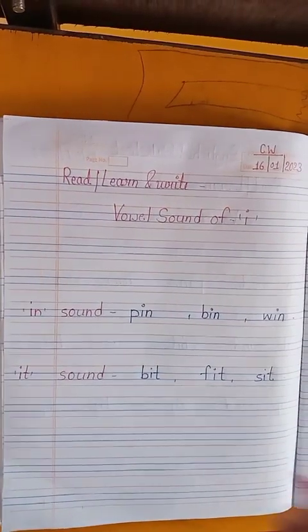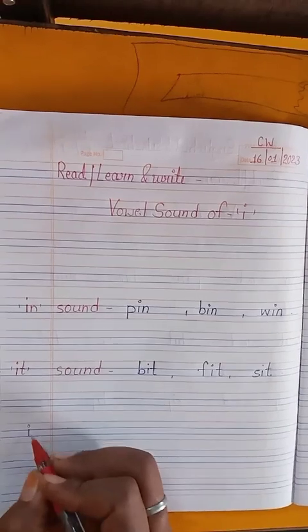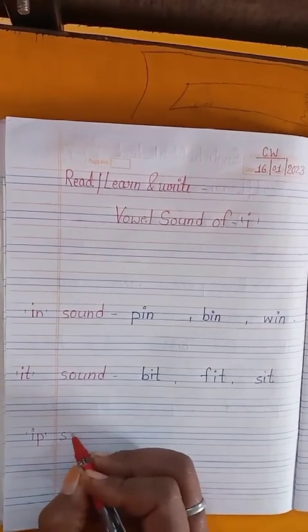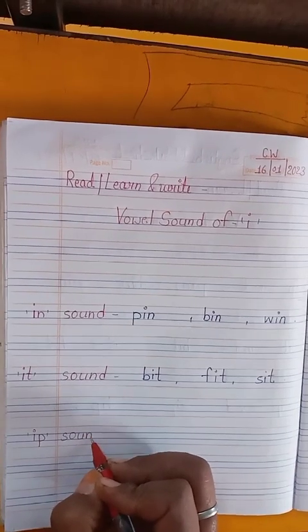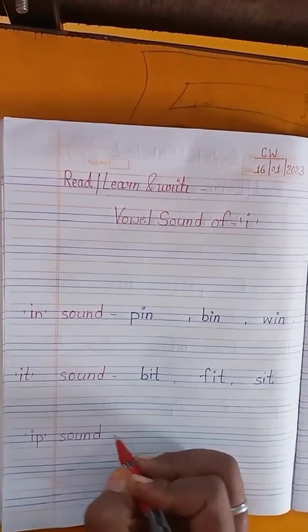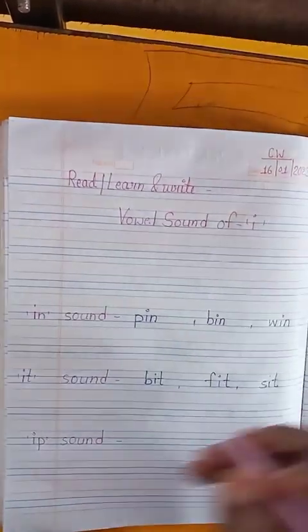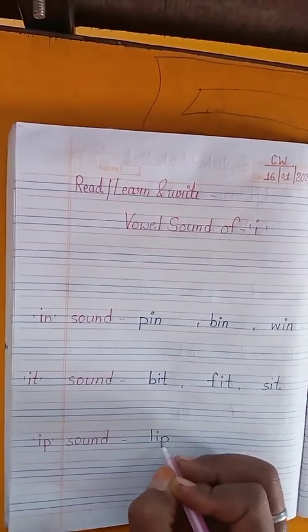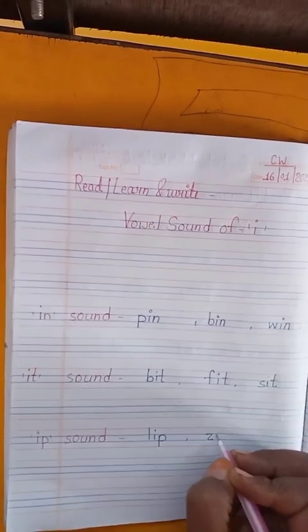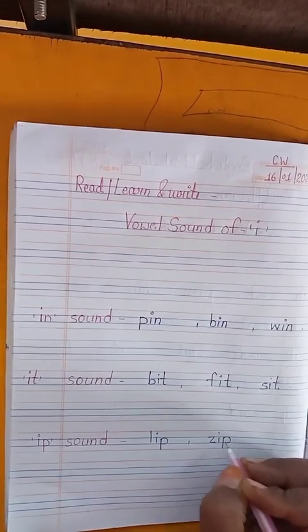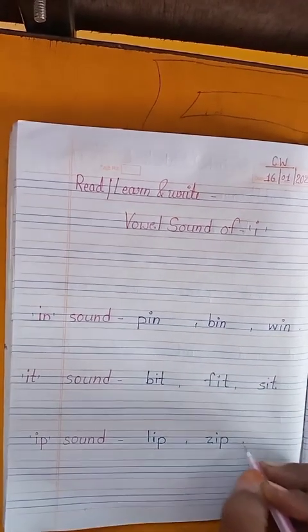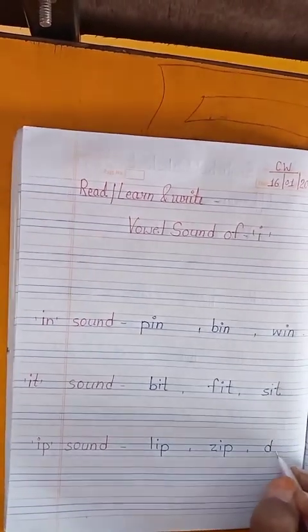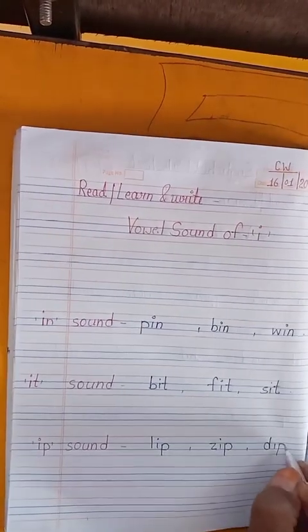Next, write karenge: I-P, hip sound. S-O-U-N-D, sound. L-I-P lip, Z-I-P zip, D-I-P dip. Okay?